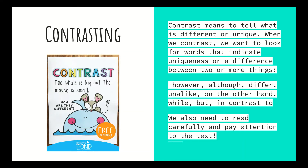Going back to the whale and mouse example — they're both animals, but what makes them different? A whale is big and a mouse is small. Whales are the largest mammals, and mice are pretty small in comparison. Words that indicate contrast — telling what is different — include: however, although, differ, unalike, on the other hand, while, but, in contrast to.